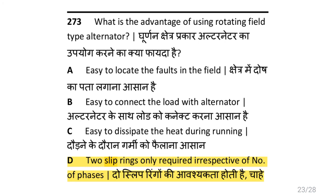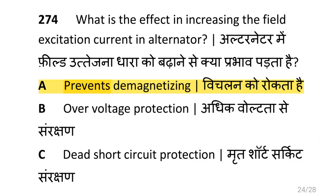What is the advantage of using a rotating magnetic field type alternator? Only two slip rings are required irrespective of the number of phases. What is the effect of increasing the field excitation current in an alternator, i.e. to prevent demagnetizing?